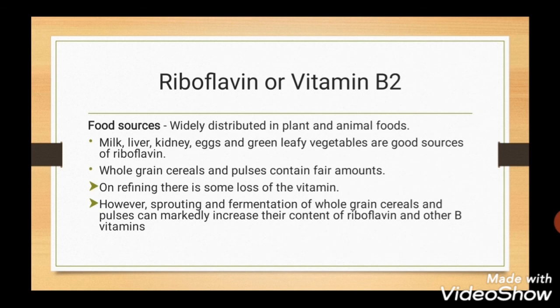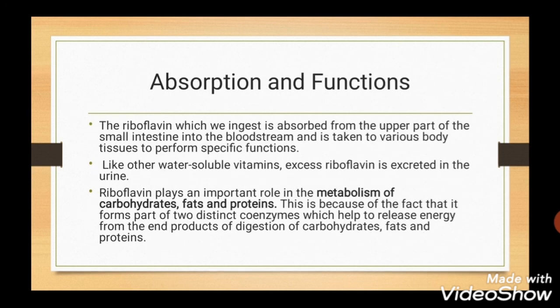Riboflavin or Vitamin B2. Food sources are milk, liver, kidney, eggs, and green leafy vegetables. Whole grain cereals and pulses also contain a fair amount of Vitamin B2. After ingestion, riboflavin is absorbed in the upper part of the small intestine and taken to various body tissues; excess riboflavin is excreted in the urine. Riboflavin plays an important role in the metabolism of carbohydrates, fats, and proteins. It forms part of two different coenzymes which help to release energy from the end products of digestion of carbohydrates, fats, and proteins.